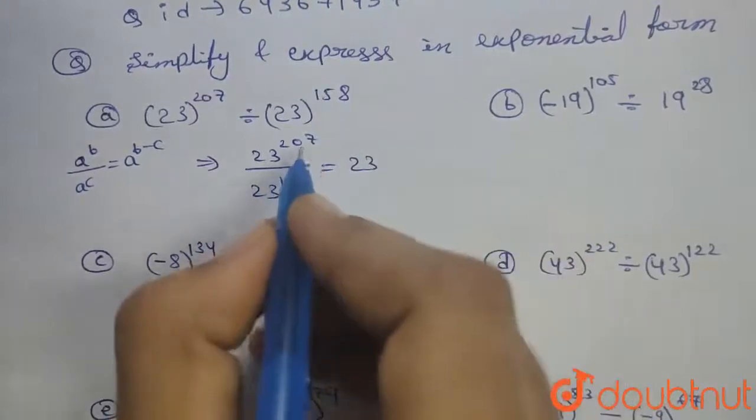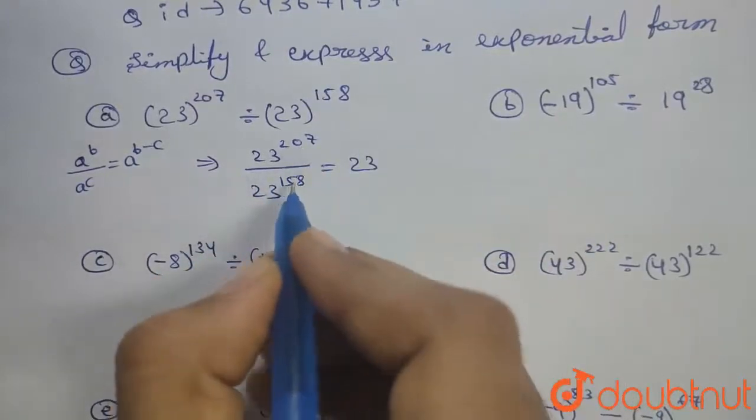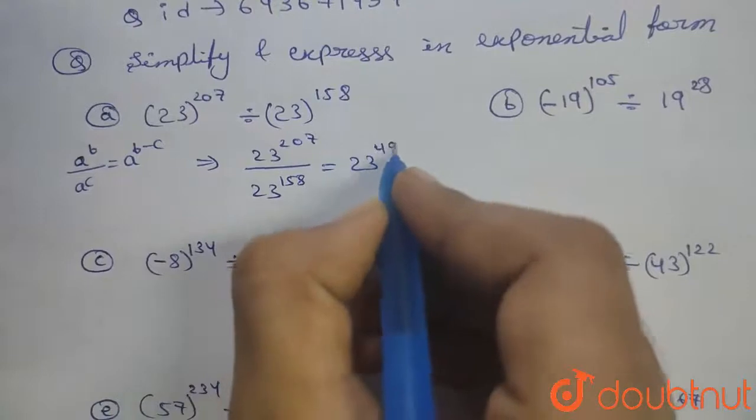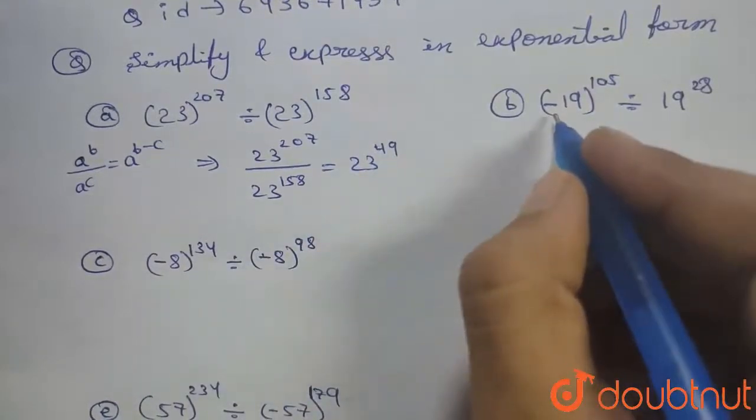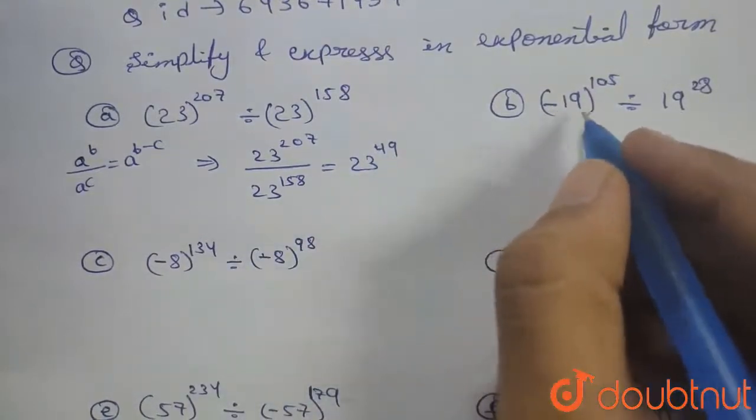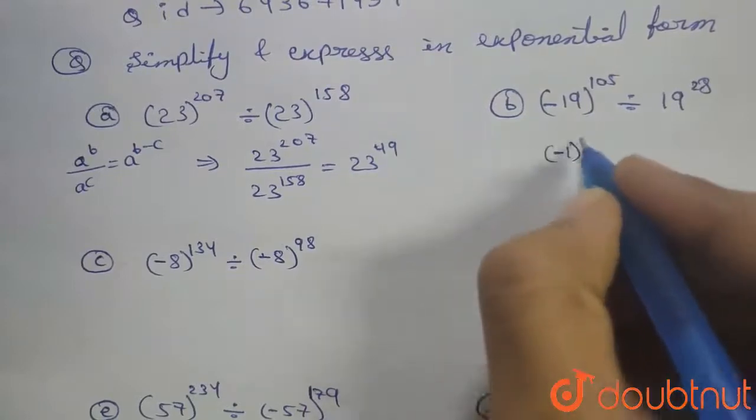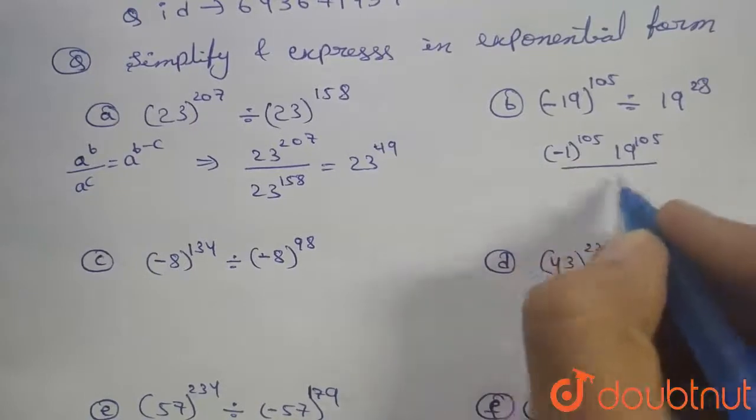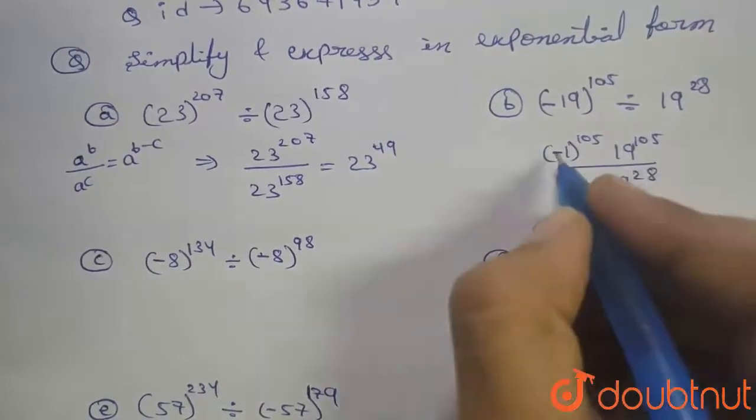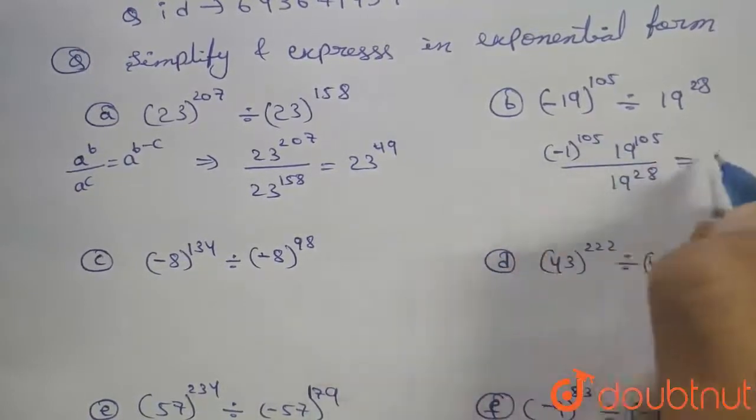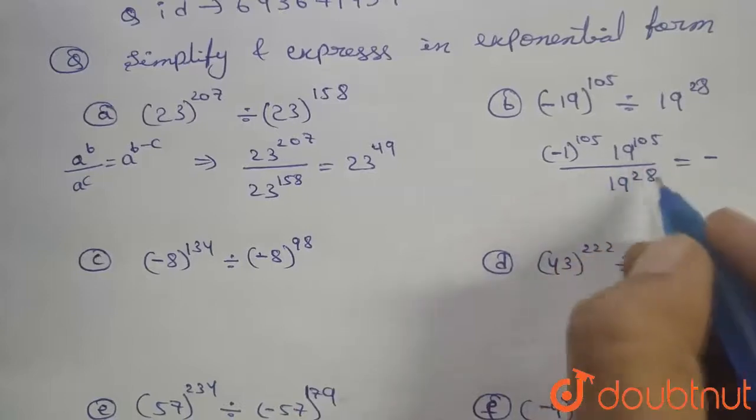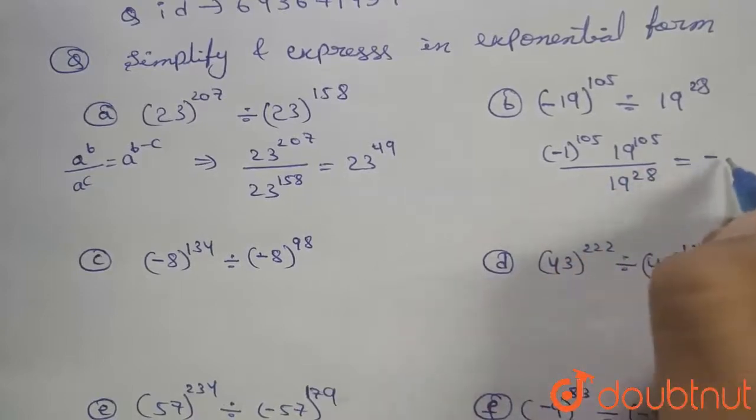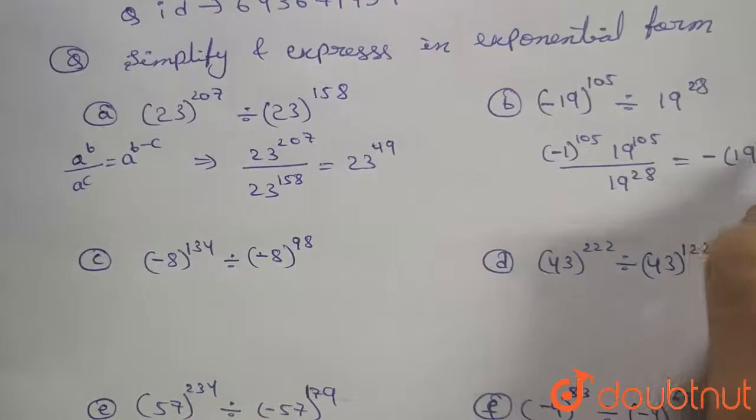Minus 1 into minus 19, minus 1 power 105 into 19 power 105 divided by 19 power 28. Minus 1 power odd number is minus, so 19 power 105 minus 28 is 19 power 77.